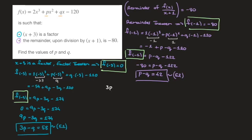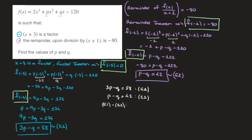Copying the equations: 3p minus q equals 58 — that's e1 — and p minus q equals 42 — that's e2. Looking at these two equations, if we subtract one from the other we eliminate q. Computing e1 minus e2: 3p minus p gives 2p, and the q terms cancel, leaving 2p equals 58 minus 42, which is 16. Dividing both sides by 2, we find p equals 8.